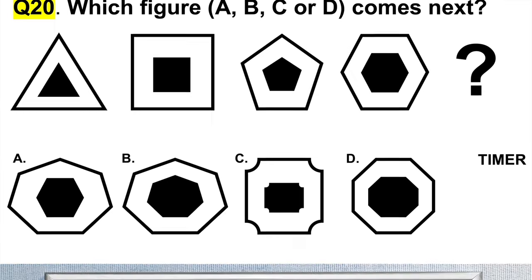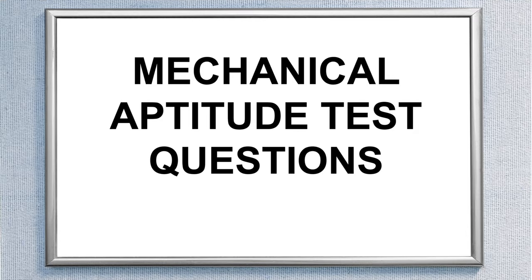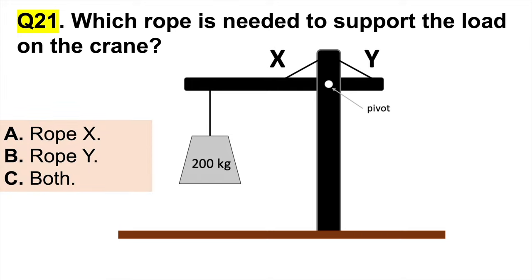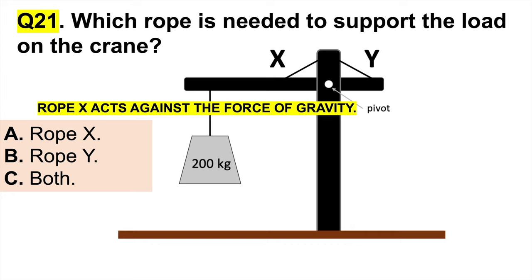Let's now move on to mechanical aptitude test questions, which often form part of psychometric tests. Question 21: which rope, X or Y, is needed to support the load on the crane? There's a 200 kilogram load — is it A: rope X, B: rope Y, or do you need both ropes? If we remove rope Y nothing happens because X supports the load. Rope X acts against the force of gravity, preventing the 200 kg load from pulling the crane down. The answer is A, rope X.